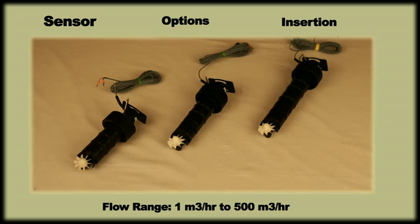Insertion type flow sensors are available for line sizes more than 1.5 inches and can be used for flows ranging from 1 m³ per hour to 500 m³ per hour.